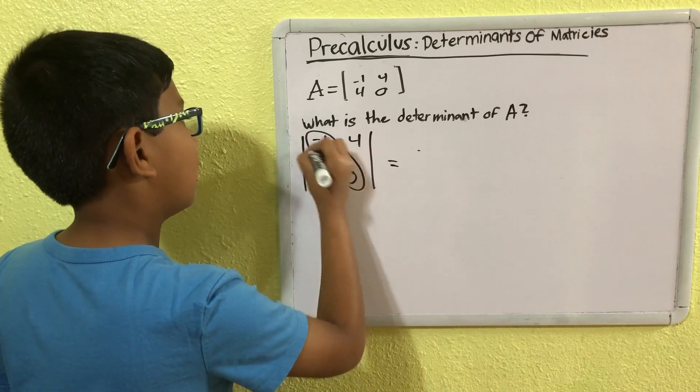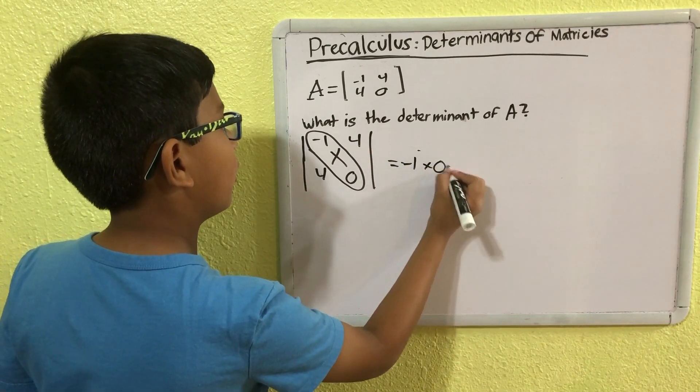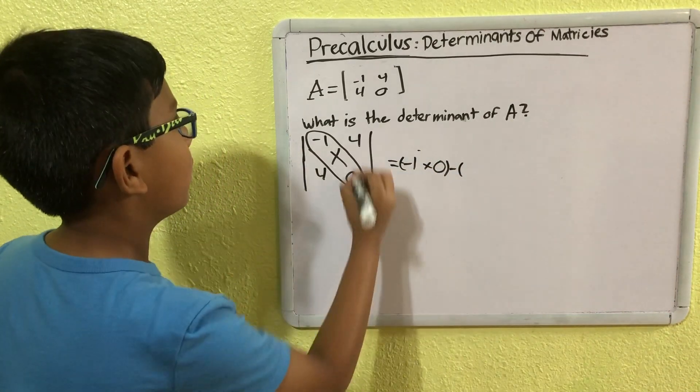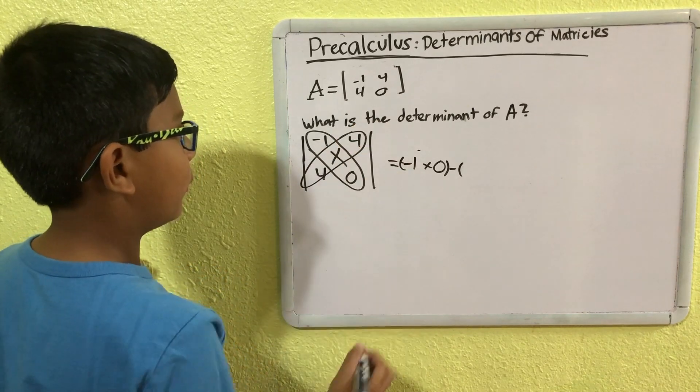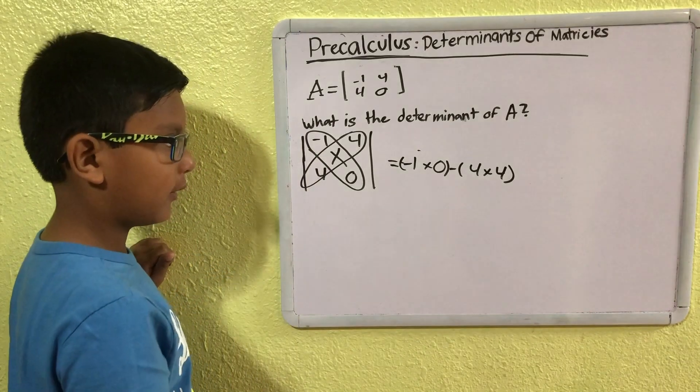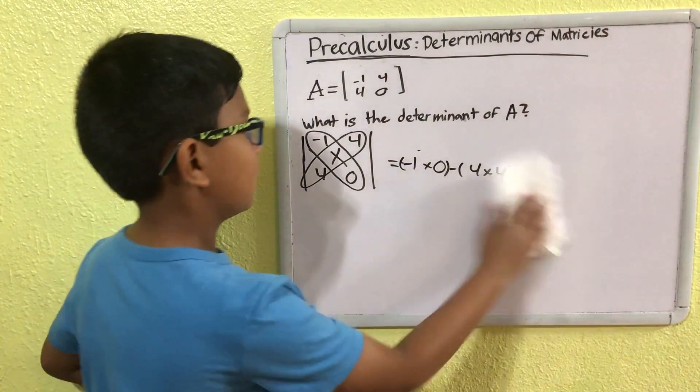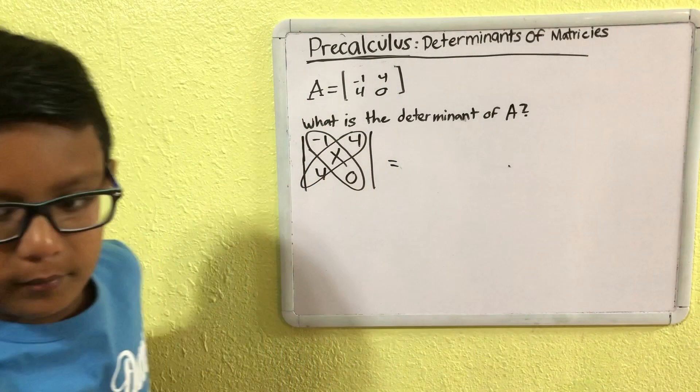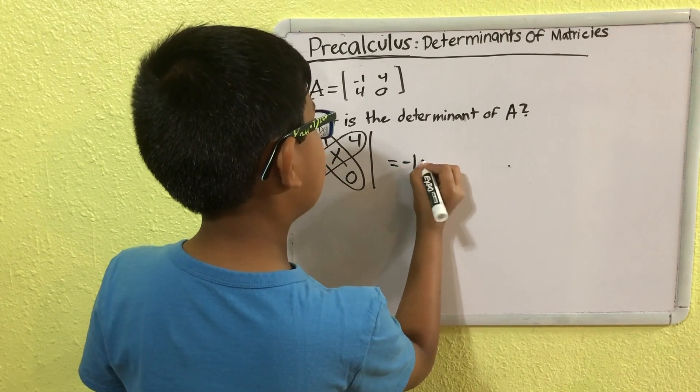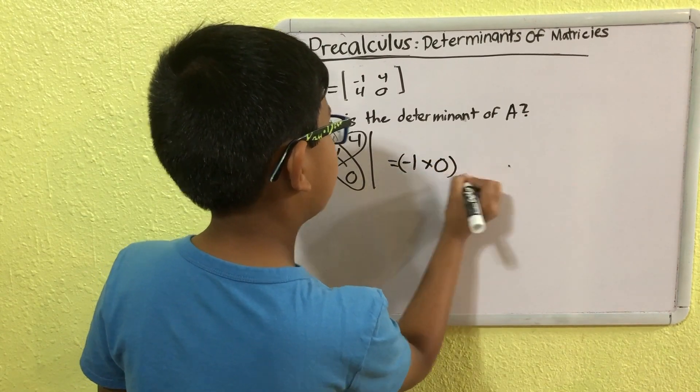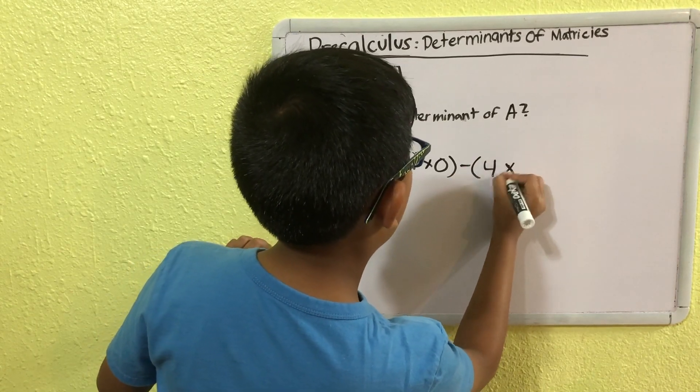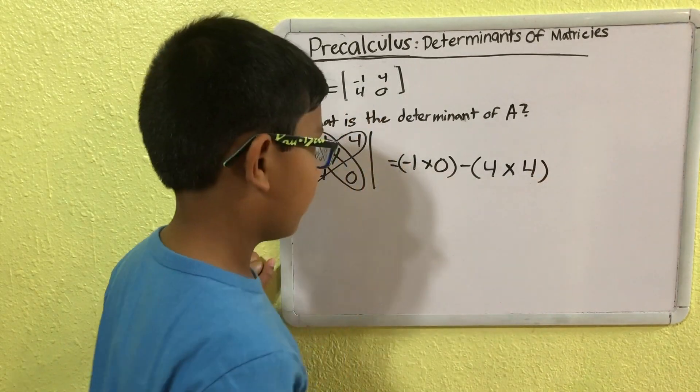And then we take the cross product, minus 1 times 0, minus, now we're getting to be pros, 4 times 4. This is crooked. Minus 1 times 0, and put that in parentheses, minus 4 times 4.